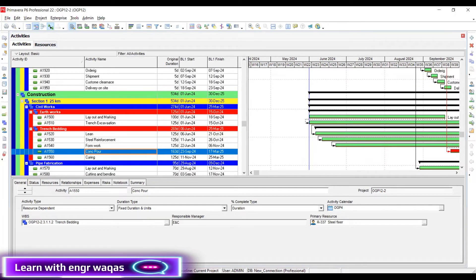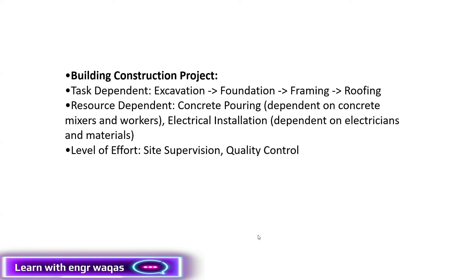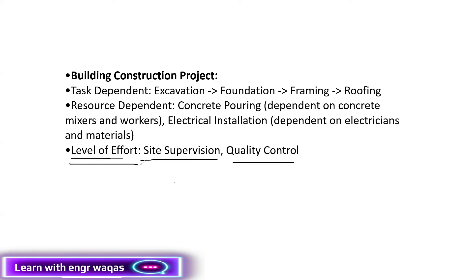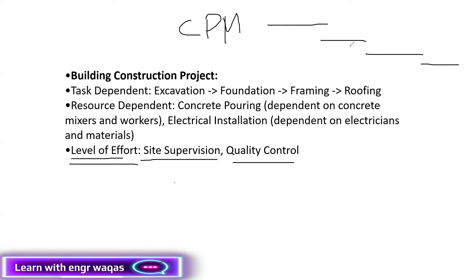Then we have Level of Effort activities. The definition: activities like site supervision, quality control, or something which is not directly relevant to the project tasks. When Primavera P6 is going to calculate CPM, it takes the longest dependent activity series. CPM definition is: the longest dependent activity series, and that would be the minimum project duration to complete the project — the minimum time within which I can deliver my project.